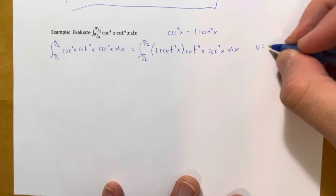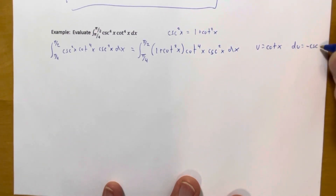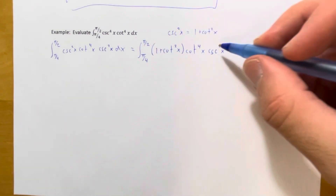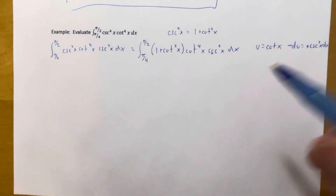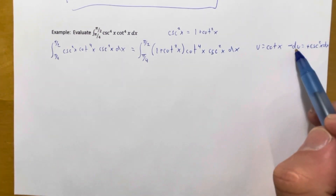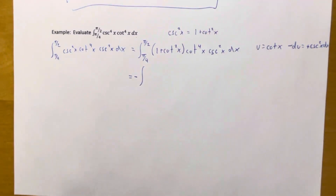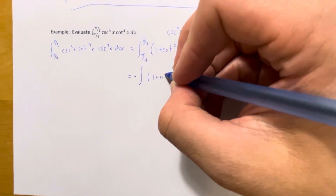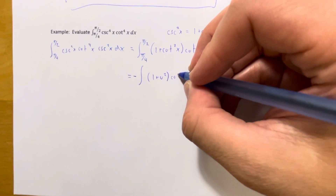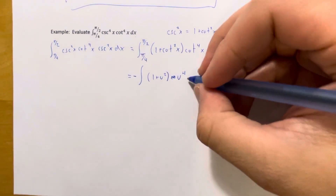Set u equal to cotangent of x so that du equals negative cosecant squared of x dx. The negative doesn't appear in the integrand, so we account for it: cosecant squared dx becomes negative du. The integrand becomes 1 plus u squared times u to the fourth, with a negative du.